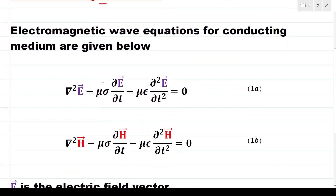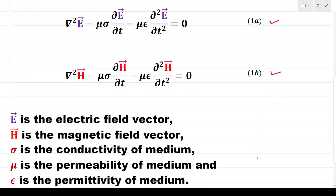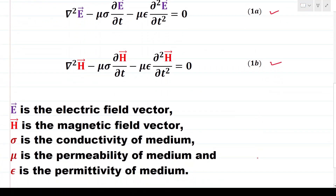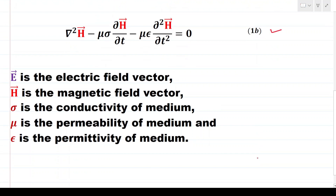Electromagnetic wave equations for conducting medium are given as equation 1a and equation 1b. Here, E is the electric field vector, H is the magnetic field vector, sigma is the conductivity of medium, mu is the permeability of medium, and epsilon is the permittivity of medium.